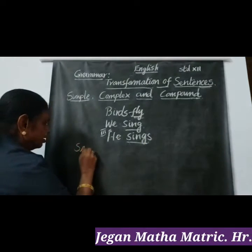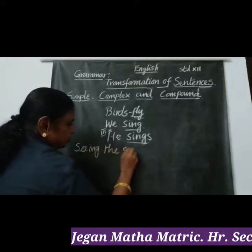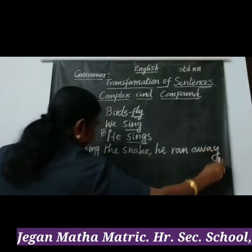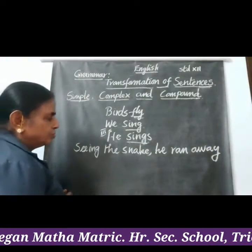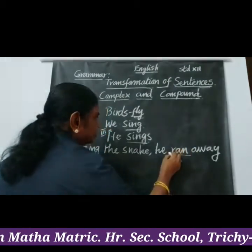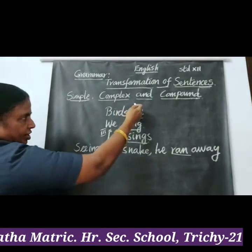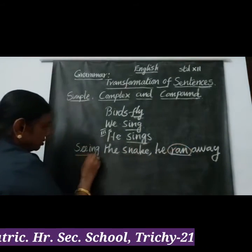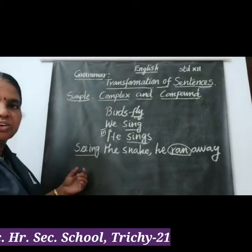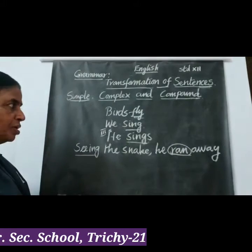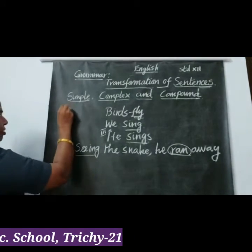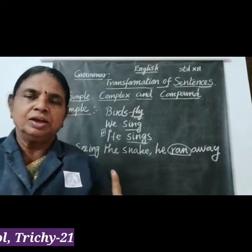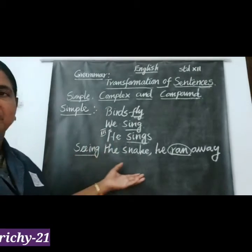Now consider another sentence: 'Seeing the snake, he ran away.' You can see there are two verbs in this sentence. The finite verb is 'ran.' The other verb, 'seeing,' is a non-finite verb — specifically a present participle. So this is still a simple sentence. A simple sentence has only one finite verb, and it may also have non-finite verbs.